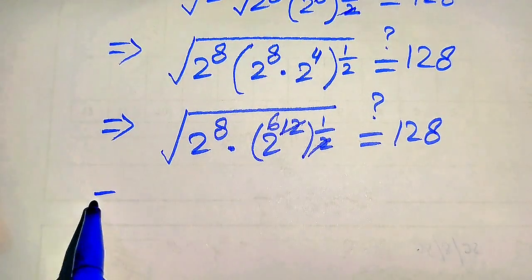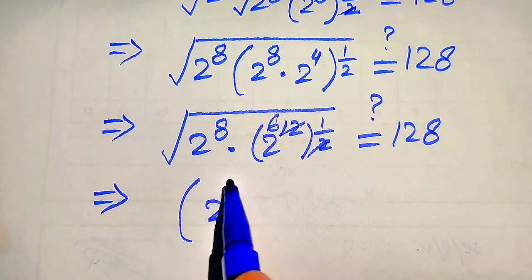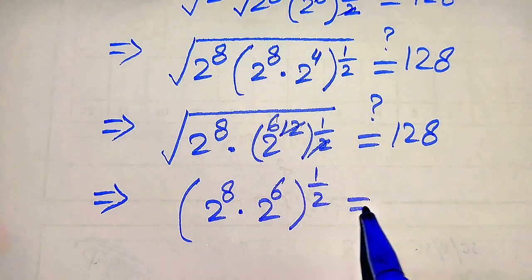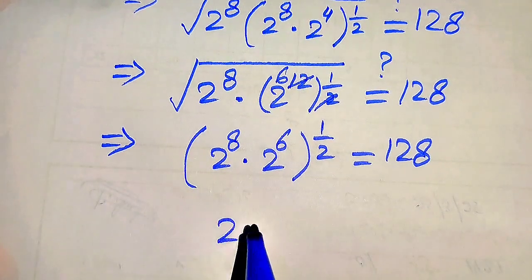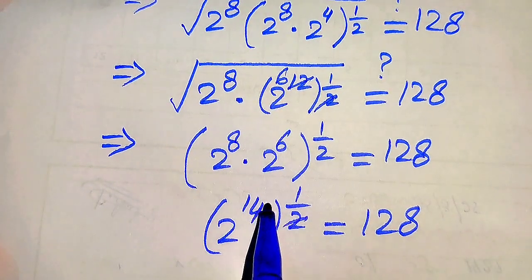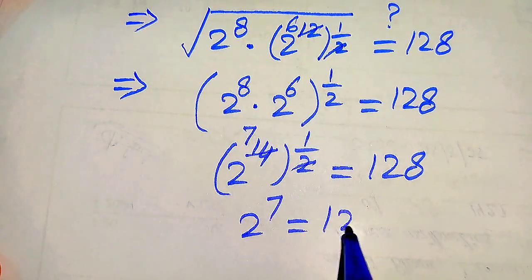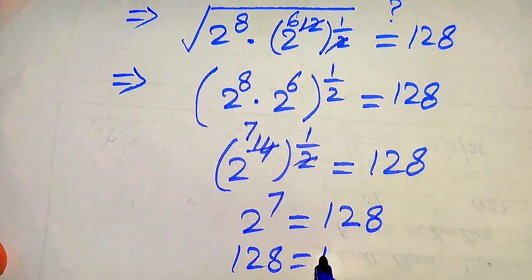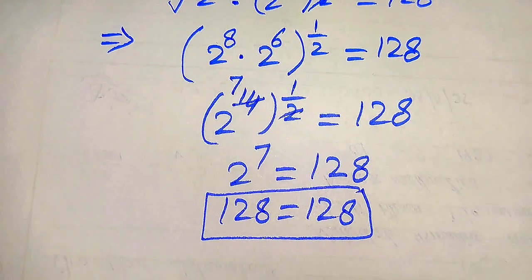These cancel and 2 times 6 becomes 12. Writing the square root in exponent form gives 2 to the power of eight times 2 to the power of six whole to the power of one-half, equals 128. Adding these two values: 2 to the power of 14 whole to the power of one-half equals 128. Since 2 times 7 is 14, we get 2 to the power of seven equals 128, and indeed 128 equals 128. This confirms the value of m satisfies the given equation, and this is the final answer.